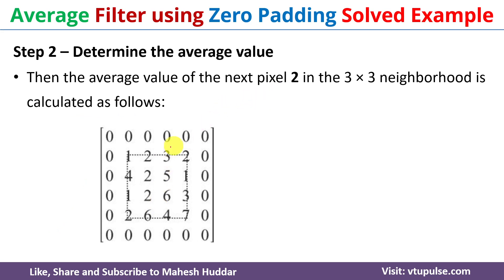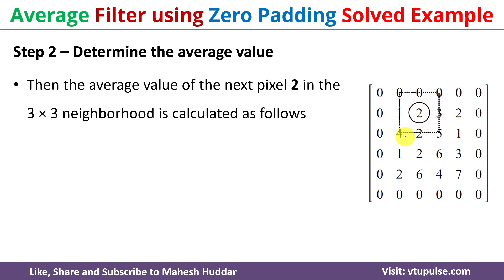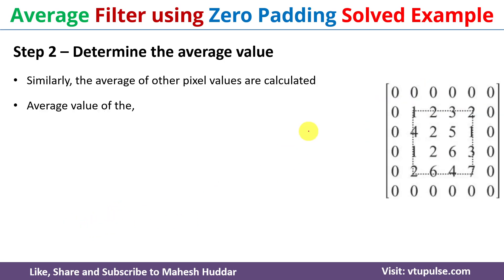Similarly, for pixel 2, we consider the three cross three neighborhood matrix. We add all nine values and divide by nine, which gives 1.89. Since the average value must be in integer form, 1.89 is approximately equal to 2. So the average value for pixel 2 becomes 2.